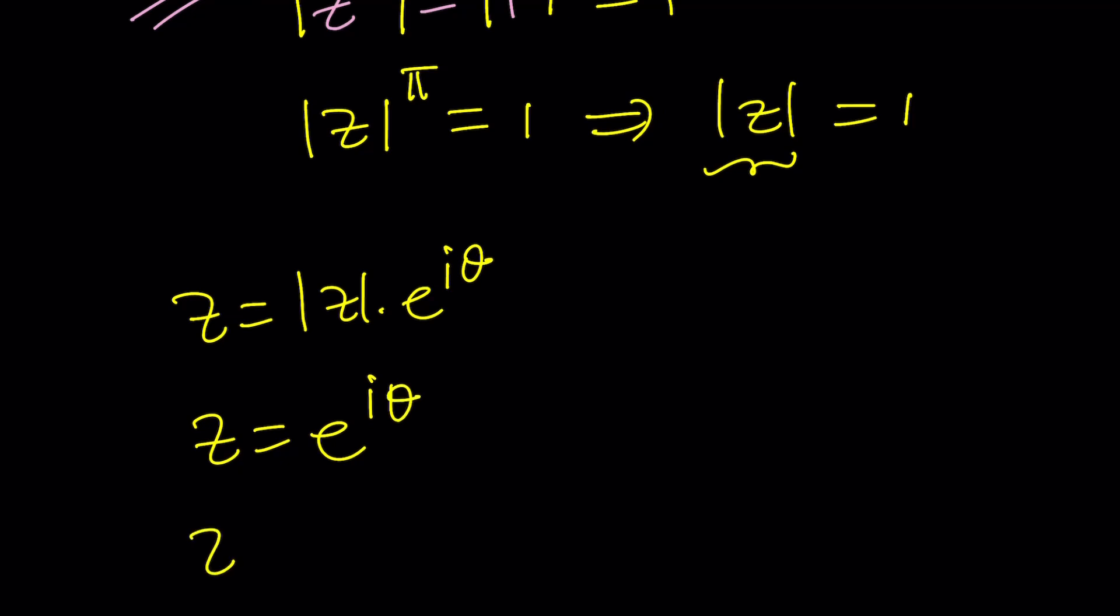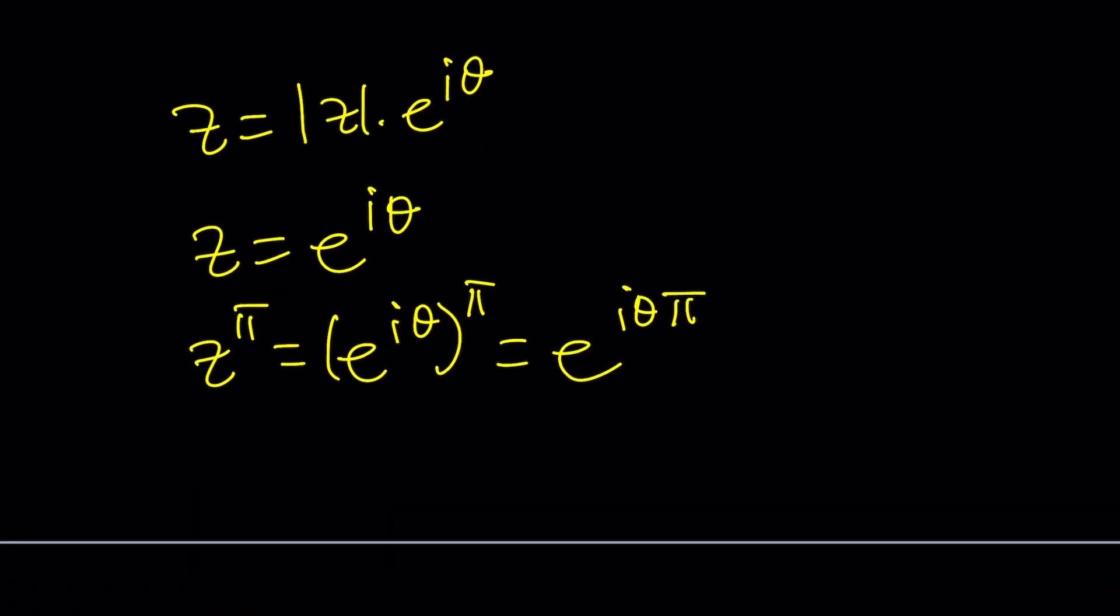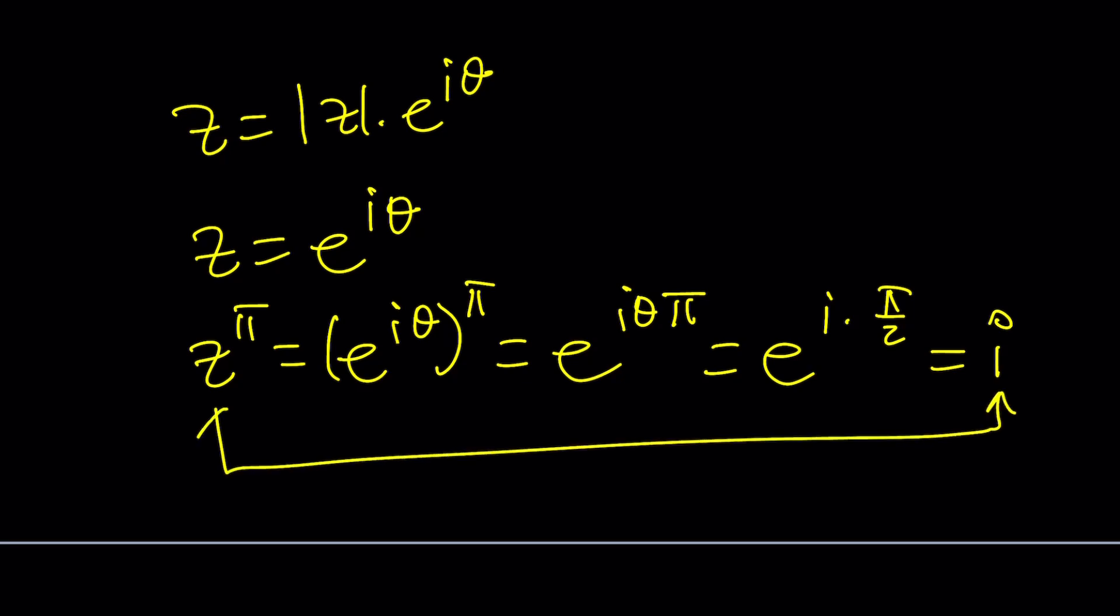And then z to the π is just going to be e to the i θ to the power π, which is e to the power i θ π. Great. And then this is equal to e to the power i times π over 2, because that's what i is equal to. Remember, z to the π was equal to i. Everything is equal.